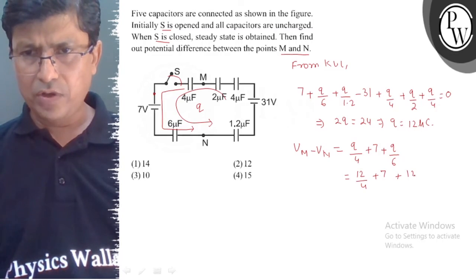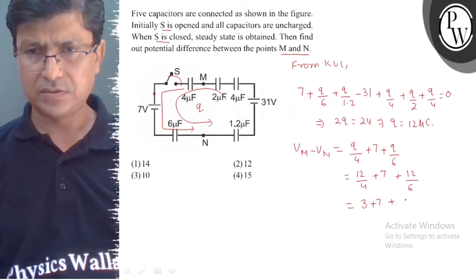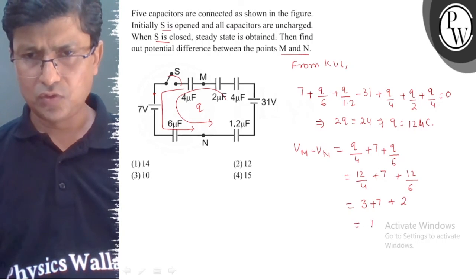12 by 6, which is 3 volts plus 7 volts plus 2 equals 12 volts.